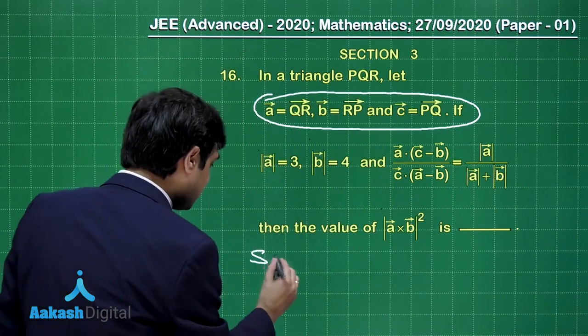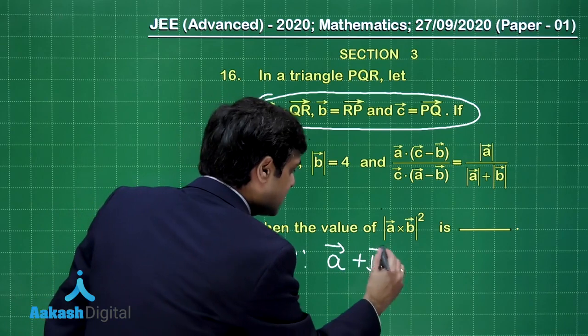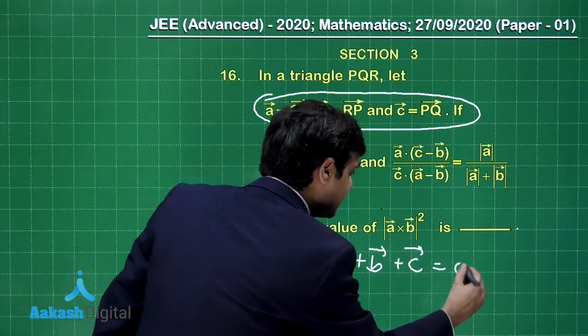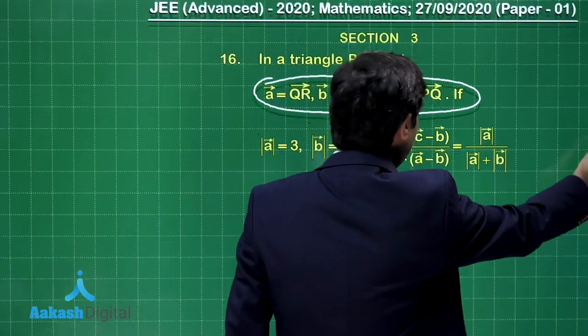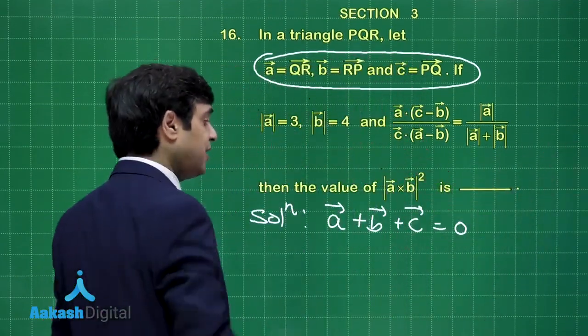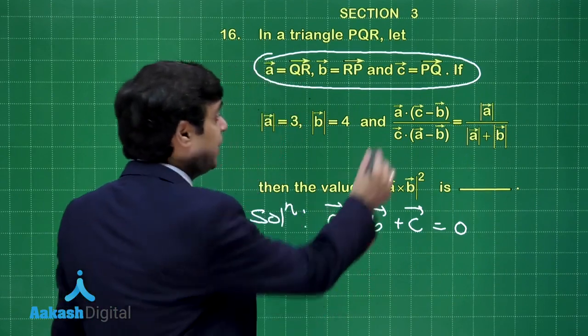What this result is talking about? This is saying A vector plus B vector plus C vector equals 0. Now from here we can find A dot C to put it here, or we can try to find A dot B to put it here.